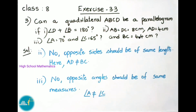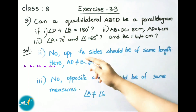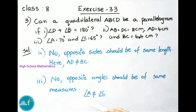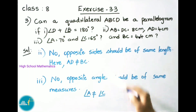For part (iii): angle A equals 70 degrees and angle C equals 65 degrees. We know opposite angles should be of the same measurement, but here they are different — angle A is not equal to angle C — therefore they cannot form a parallelogram.